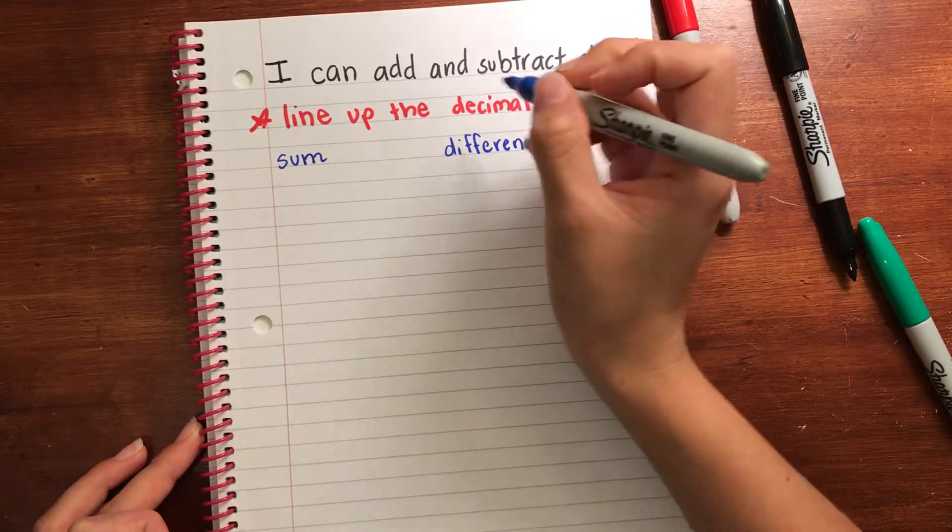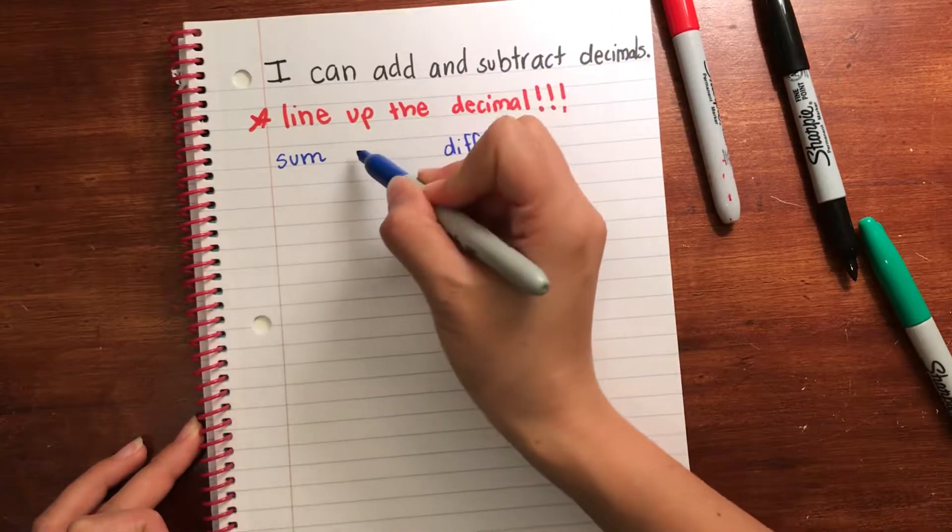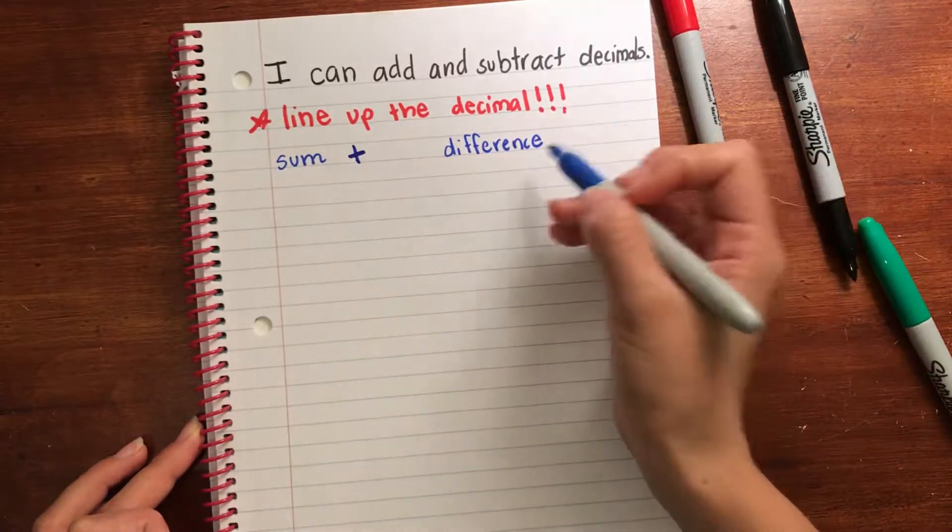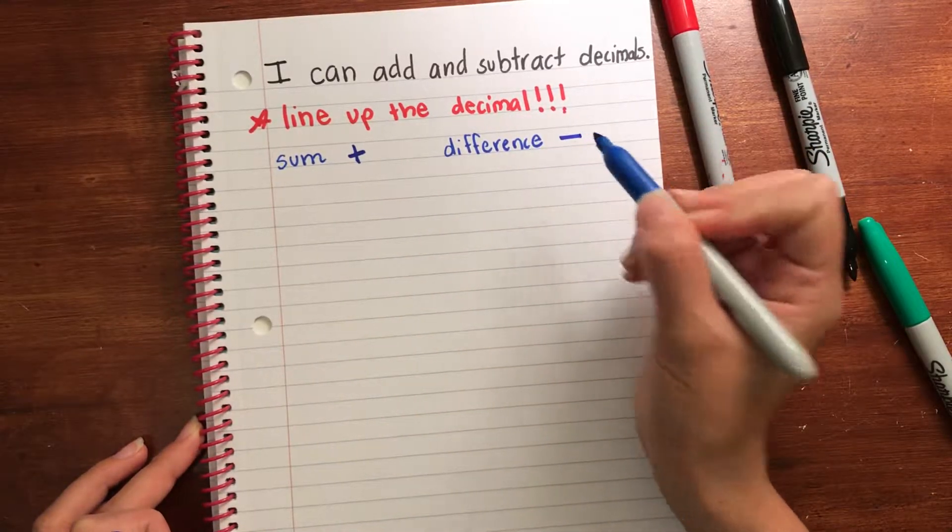Sum is the result of an addition problem, so addition. Difference is the result of a subtraction problem, subtraction.